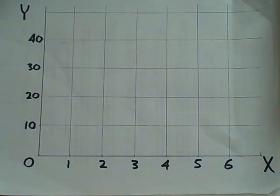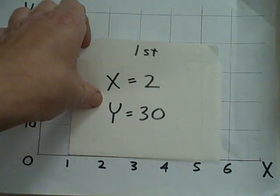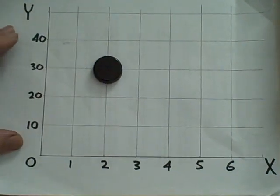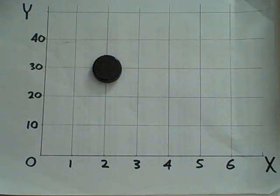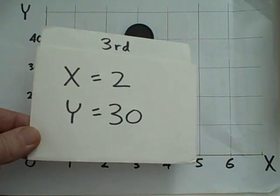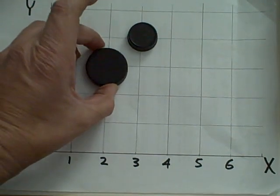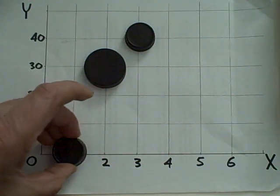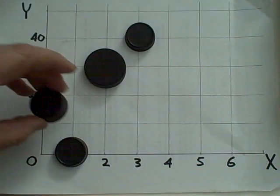Let's take a look at how this would work with five cases. Our first subject scores 2 on x and 30 on y — let's put a black dot right there. Our next subject scores 3 on x and 40 on y, right there. Our third subject also scores 2 on x and 30 on y, so we add another data point — let's use a bigger dot. Our fourth subject is 1 on x and 0 on y. And our last subject is 1 on x and 10 on y, right there.